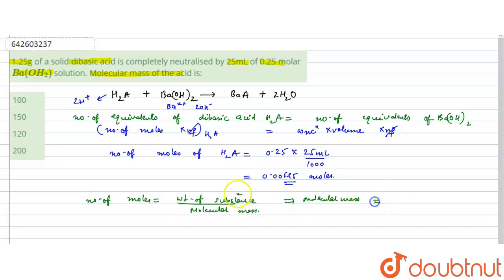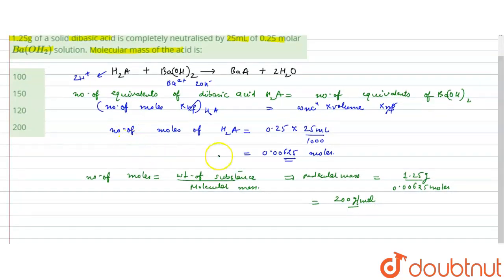Now we have to find the molecular mass, so it will be weight of the acid upon number of moles. Weight of the acid is given 1.25 gram and moles we have calculated is 0.00625 moles. So it will give the molecular mass as 200 gram per mole. So the molecular mass of the dibasic acid is 200 gram per mole.